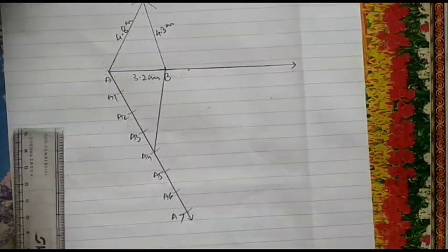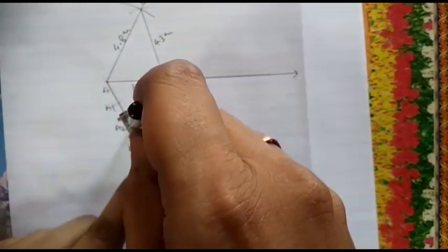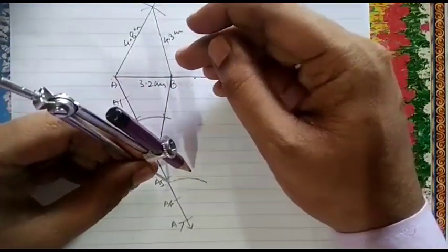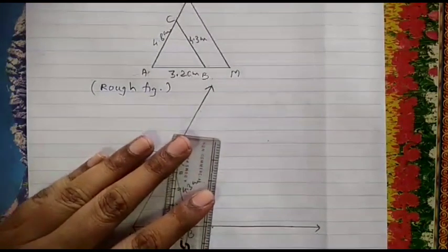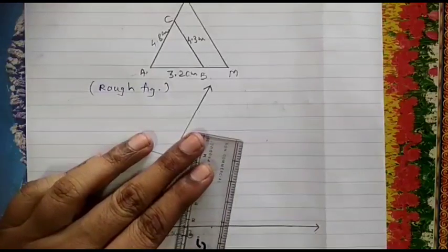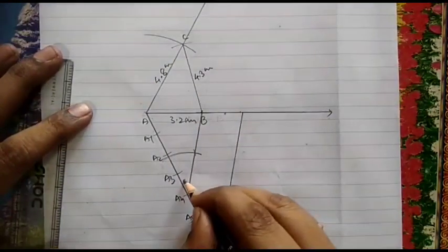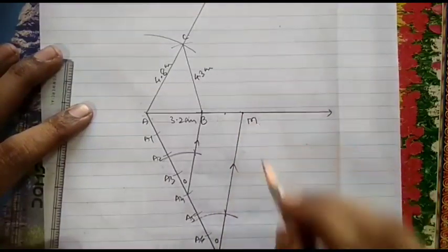From A7, draw a parallel line to A4B. Keep a steel point on A4, draw an arc with any radius intersecting two arms. Keep a steel point at A7 and draw an arc with the same radius. Change the radius equal to the distance between the two arms and draw the intersecting arc. Do not change the radius. Keep a steel point here and draw another intersecting arc. Join this point of intersection. Label this point M.